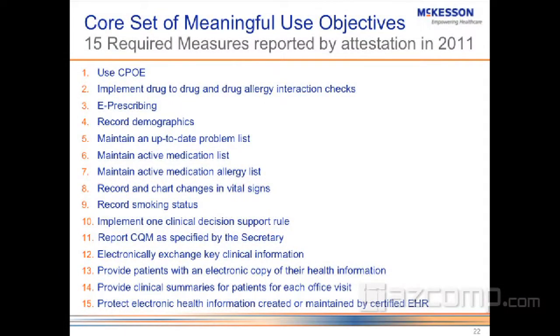If you maintain an active medication list, more than 80% of your unique patients seen by the eligible provider must have at least one entry or an indication that the patient is not currently on a medication, recorded as structured data. During the reporting period, 80% of patients you actually see, you have to collect whether or not they're taking a medication and put it in structured data. It's not a difficult thing to do.